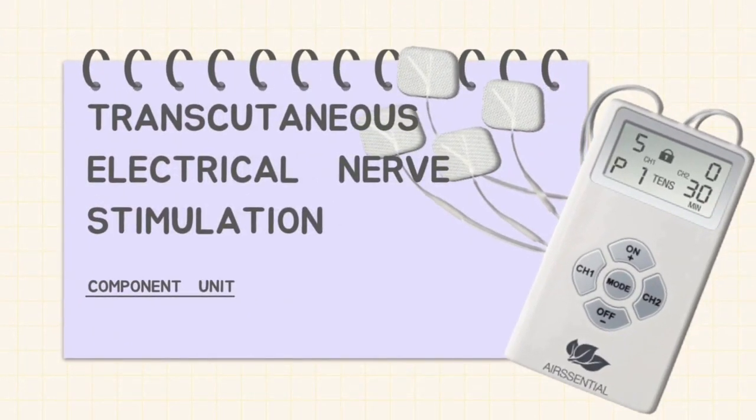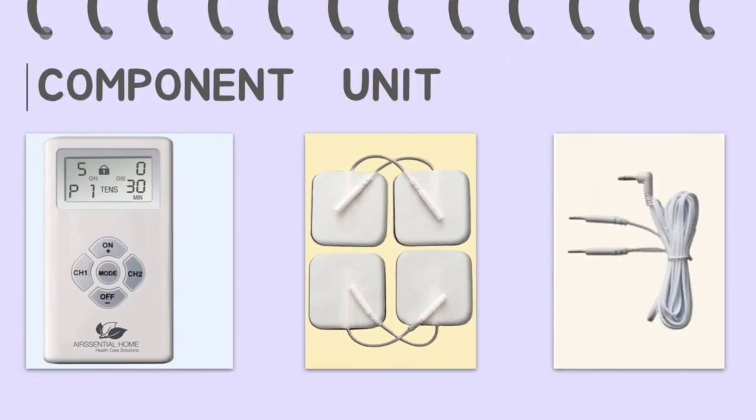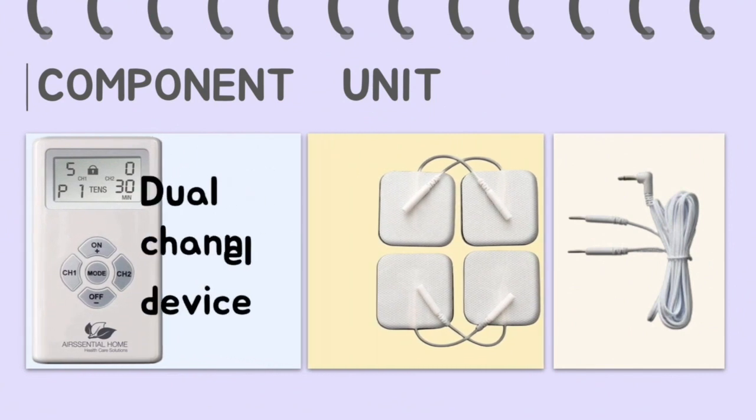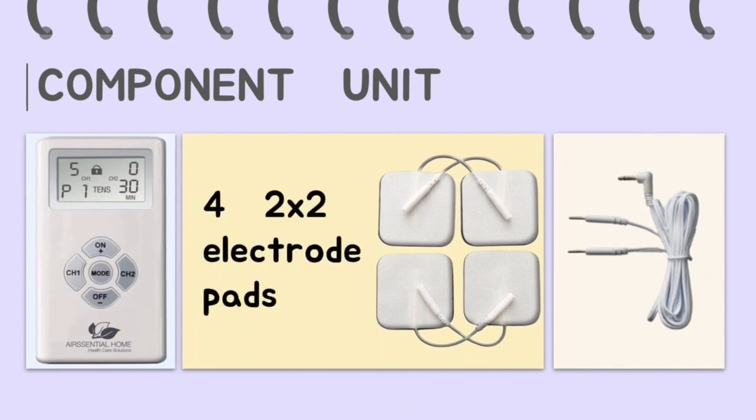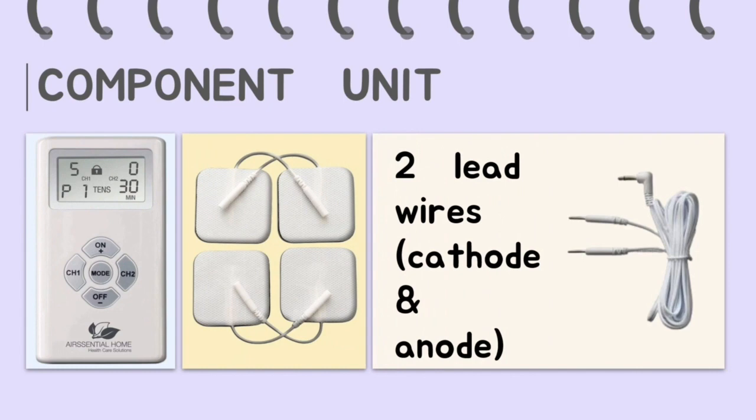Introducing transcutaneous electrical nerve stimulation. TENS consists of three things which are dual channel device, four, two times two electrode pads, and lastly, two lead wires cathode and anode.